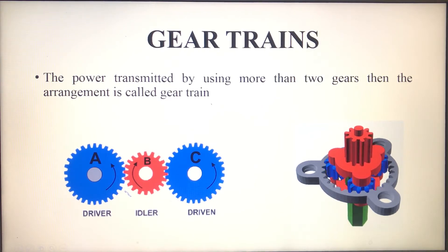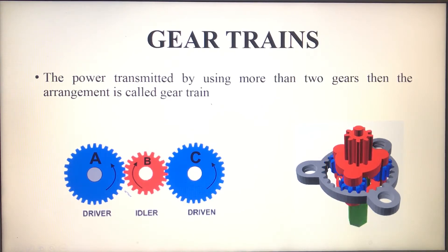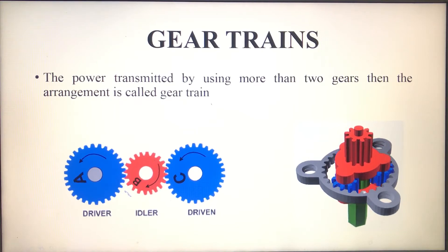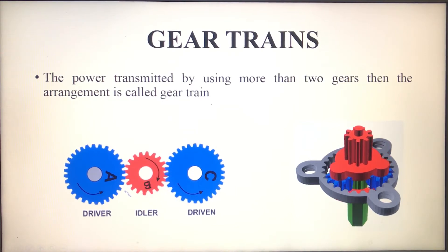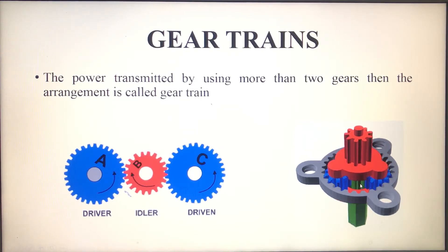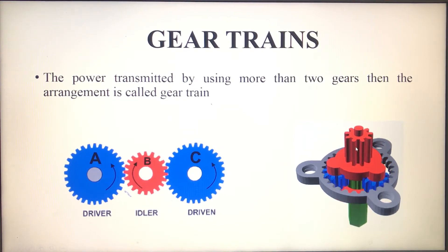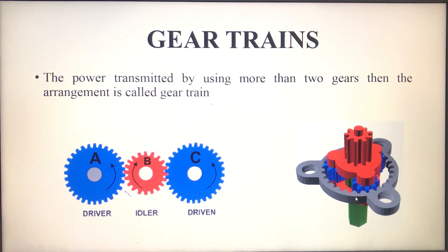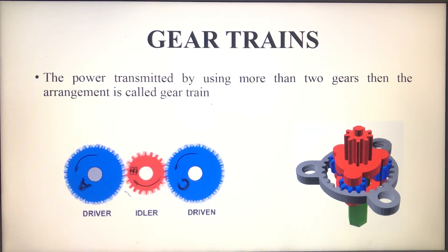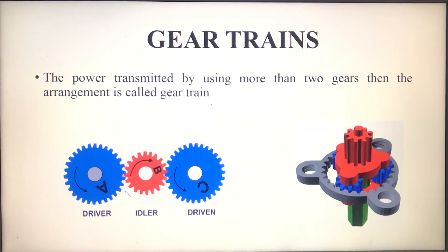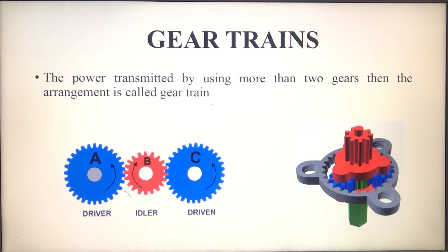Here also, you are using a total of six gears — three blue color gears, one green color, one red color, and another one is an annular gear or ring gear to transmit the power. So this is also called as a gear train arrangement.